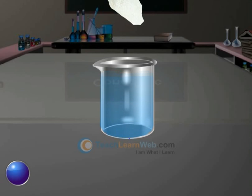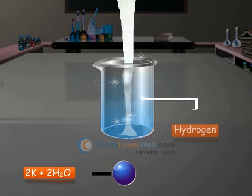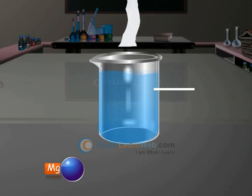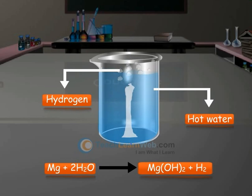Potassium reacts violently with cold water, evolving a lot of hydrogen and heat. Magnesium reacts with hot water to form magnesium hydroxide and hydrogen. Hydrogen gas bubbles make it float on water.